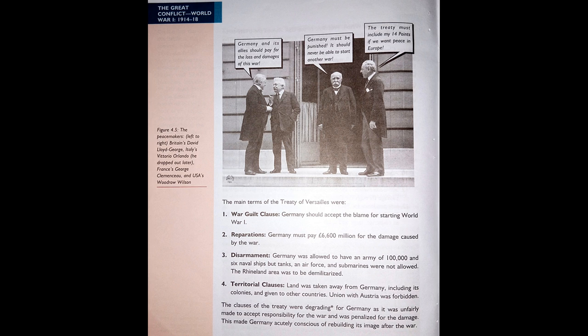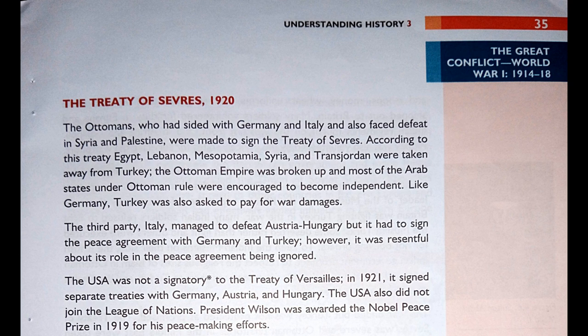Four — Territorial Clauses: Land was taken away from Germany including its colonies and given to other countries. Union with Austria was forbidden. The clauses of the treaty were degrading for Germany — degrading meaning causing a loss of self-respect — as it was unfairly made to accept responsibility for the war and was penalized for the damage. This made Germany acutely conscious of rebuilding its image after the war.